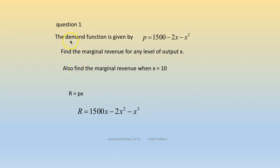Coming to a few questions. Question 1: the demand function is given by p = 1500 - 2x - x². Find the marginal revenue for any level of output x, and also find the marginal revenue when x = 10.